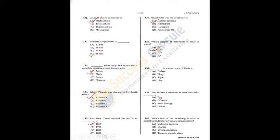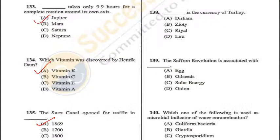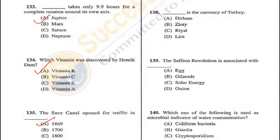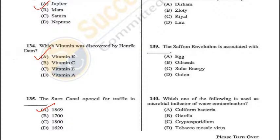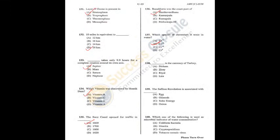Question 138: The currency of Turkey is Lira — D is the correct answer. Question 139: The Saffron Revolution is associated with solar energy — C is the correct answer. Question 140: Which is used as a microbial indicator of water contamination? Coliform bacteria — A is the answer. This question is repeated. Q138 = D, Q139 = C, Q140 = A.